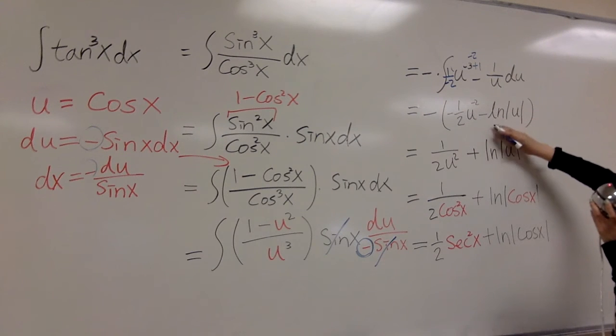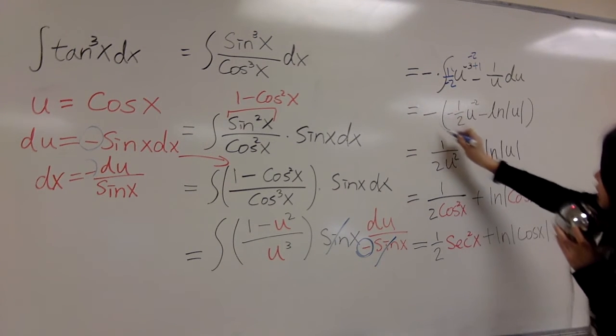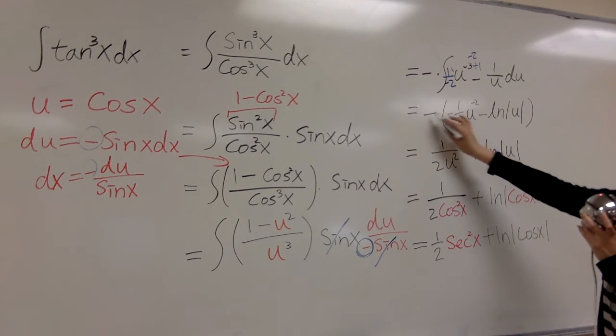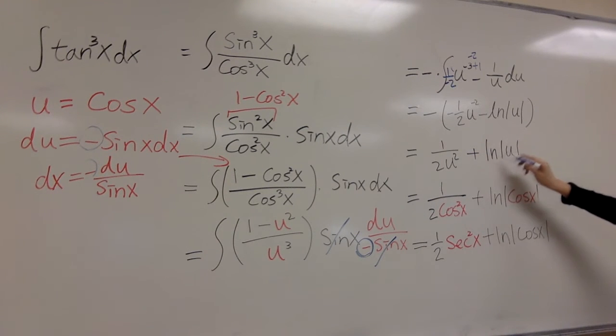Minus this one is ln u. And you distribute your negative sign, and that will become positive and positive. So that's 1 over 2 u squared plus ln u.